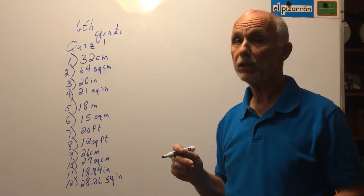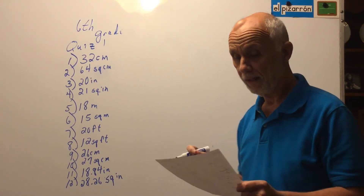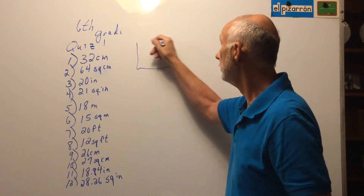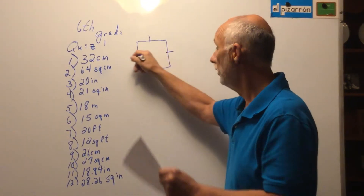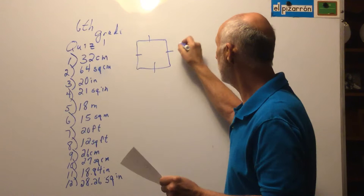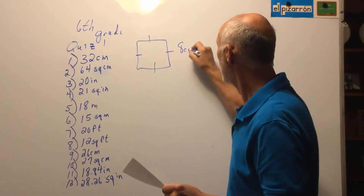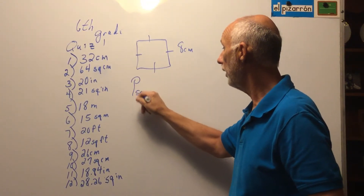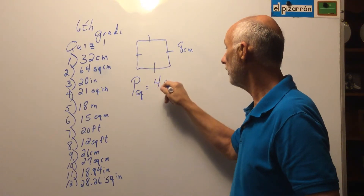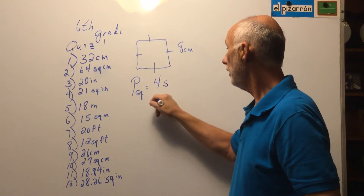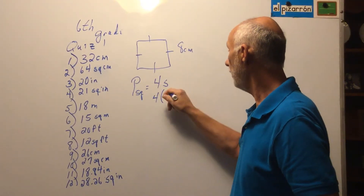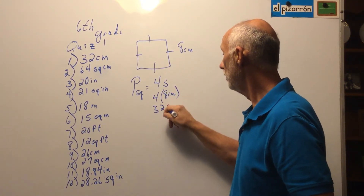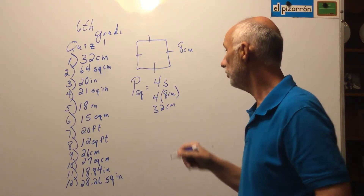The first figure was a square with a side of eight centimeters. We start with the formula: perimeter of a square equals four times s. S stands for the length of the side, which is eight centimeters, so the answer is 32 centimeters. Formula, replace the variable with its value, get the answer.